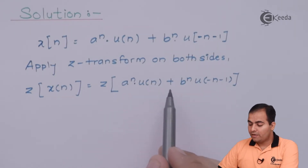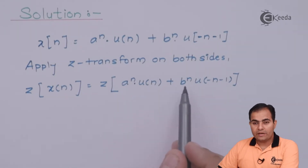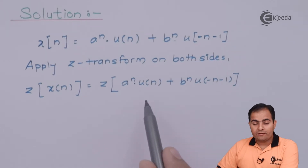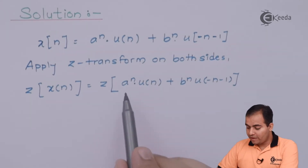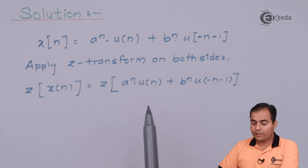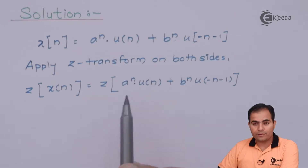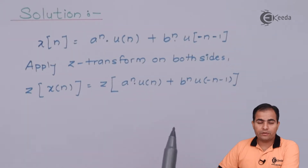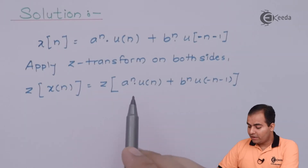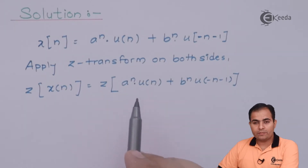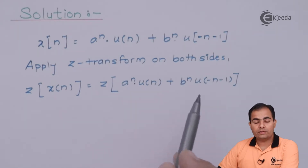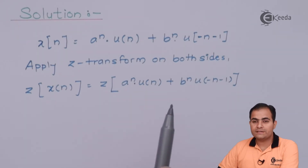On the right-hand side we have: Z transform of A^n U(n) plus B^n U(-n-1). We need to separate these two functions and apply the Z transform on each separately using the linearity property. The linearity property gives us the Z transform of both functions independently.